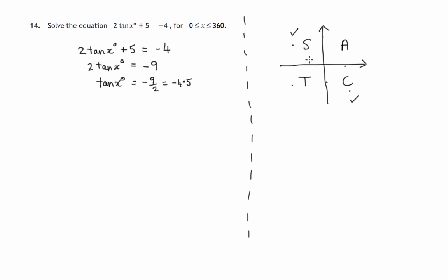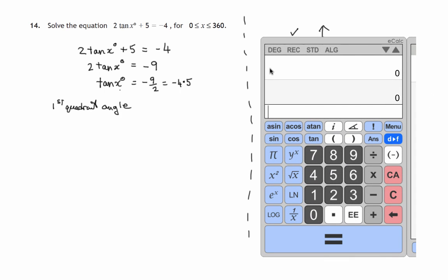So these are the two quadrants that we know x is going to be in. However, our first task is to find the first quadrant angle. So we forget about the negative. We're just in here between 0 and 90 with the tan of x being 4.5. So we need to find out what angle has a tangent of 4.5.